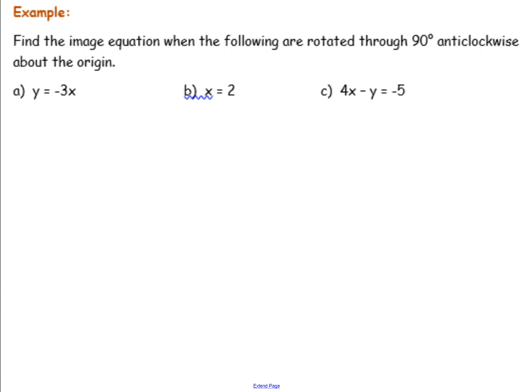One last page before the end of the lesson. This question is: find the image equation when the following are rotated through 90 degrees anticlockwise about the origin. A, B, and C are just equations of straight lines. What I'd suggest you do is sketch a graph of that straight line, then try rotating it 90 degrees anticlockwise about the origin by using a few points, and then work out the equation of its image line.